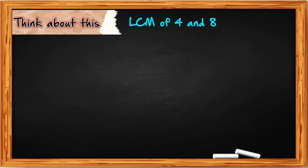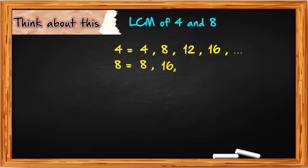Think about this. What is the least common multiple of 4 and 8? We need to list all of them. For 4, we have 4, 8, 12, 16, and so on. For 8, we have 8, 16, 24, and so on. As you noticed, 8 is common to both of them, and also 16. But when we say least common multiple, from the word least means the smallest common multiple. So the least common multiple must be 8.